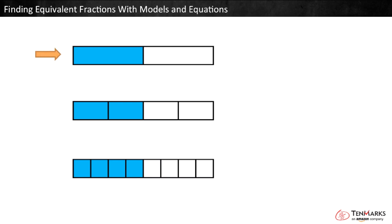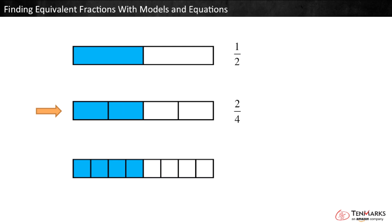The first model is divided into two equal parts. One part is shaded, so this model represents one half. In the next model, the same size whole is divided into four equal parts, and two are shaded. This represents two fourths.